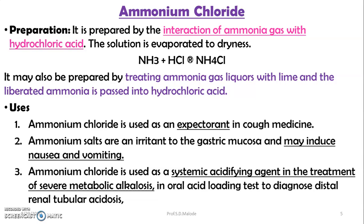Ammonium chloride is useful as an expectorant in cough medicines. Ammonium salts act as irritants to the gastric mucosa and may induce nausea and vomiting. Ammonium chloride is also used as a systemic acidifying agent in the treatment of severe metabolic alkalosis, and in oral acid loading tests to diagnose distal renal tubular acidosis.